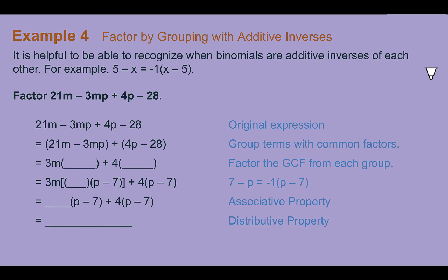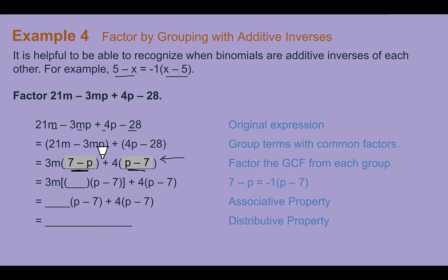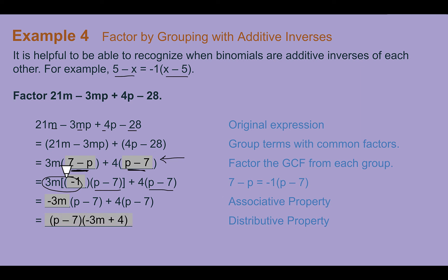It's helpful to recognize when binomials are additive inverses of each other. For example, 5 minus x equals negative 1 times the quantity x minus 5. The numbers are just switched around with subtraction in the middle. Factor 21m minus 3mp plus 4p minus 28 by grouping. The first two terms share an m — pull out 3m, leaving 7 minus p. The last two terms are divisible by 4 — pull out 4, leaving p minus 7. These are additive inverses, so factor out negative 1 from the first group to switch 7 minus p to p minus 7. Now both groups share p minus 7, and the final factored form is the quantity p minus 7 times the quantity negative 3m plus 4.